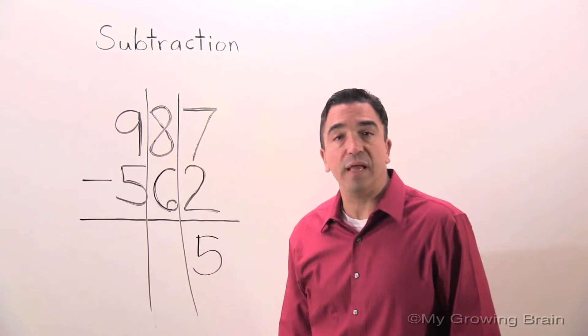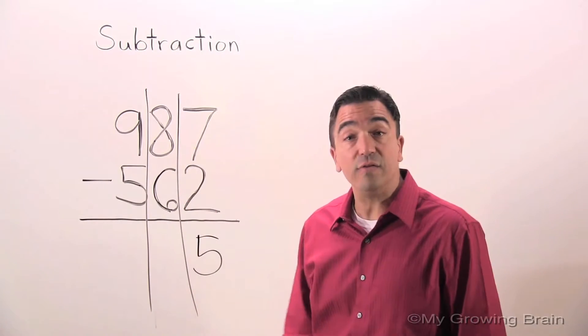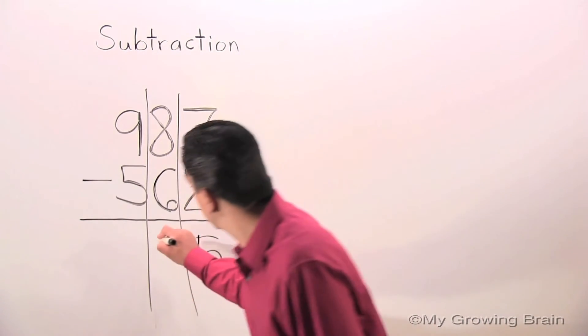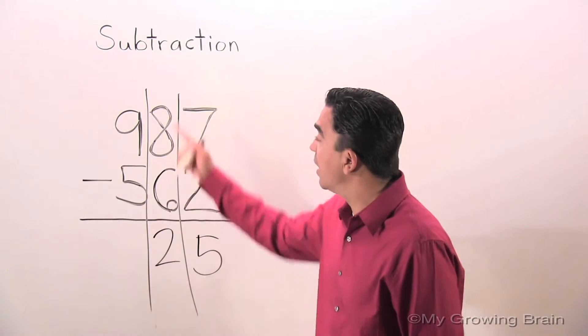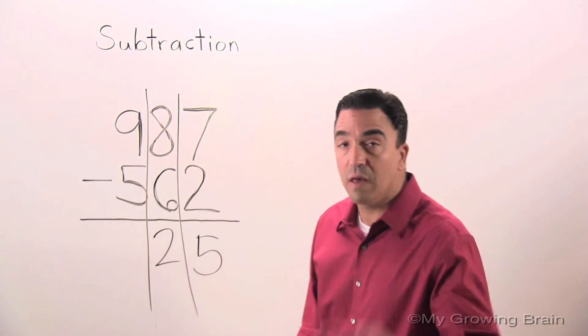Now let's go to the tens place. 8 minus 6 is 2. Let's go to the hundreds place. 9 minus 5 is 4.